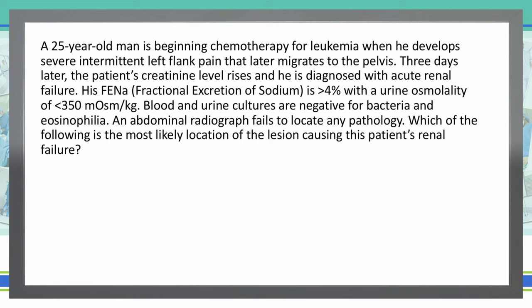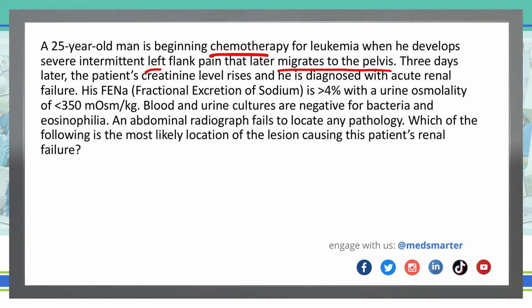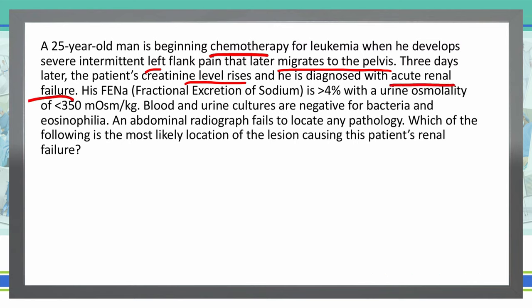Before we get to the answer choices, let's look over some important things here. The patient is undergoing chemotherapy — that's very important. He developed left flank pain that migrated to the pelvis, creatinine levels rose, and he was diagnosed with acute renal failure. His FENa was greater than 4%, urine osmolality less than 350. Bacterial cultures were negative for bacteria and eosinophilia, and the abdominal radiograph gave a negative result.